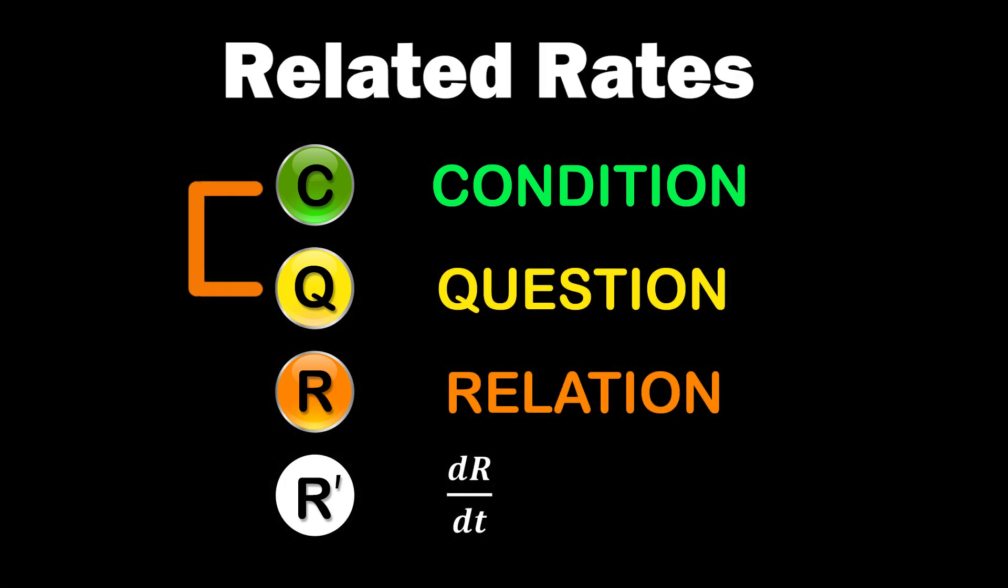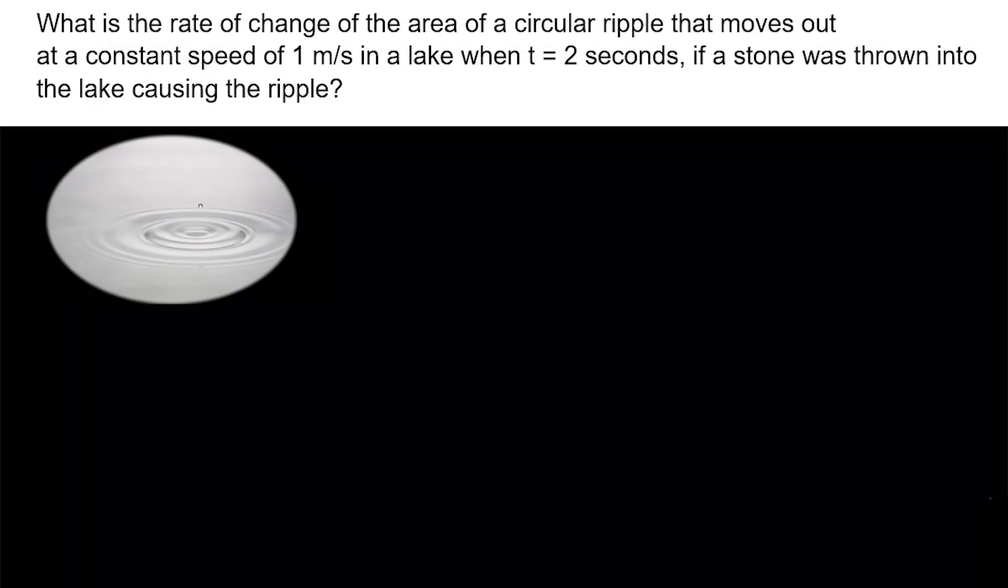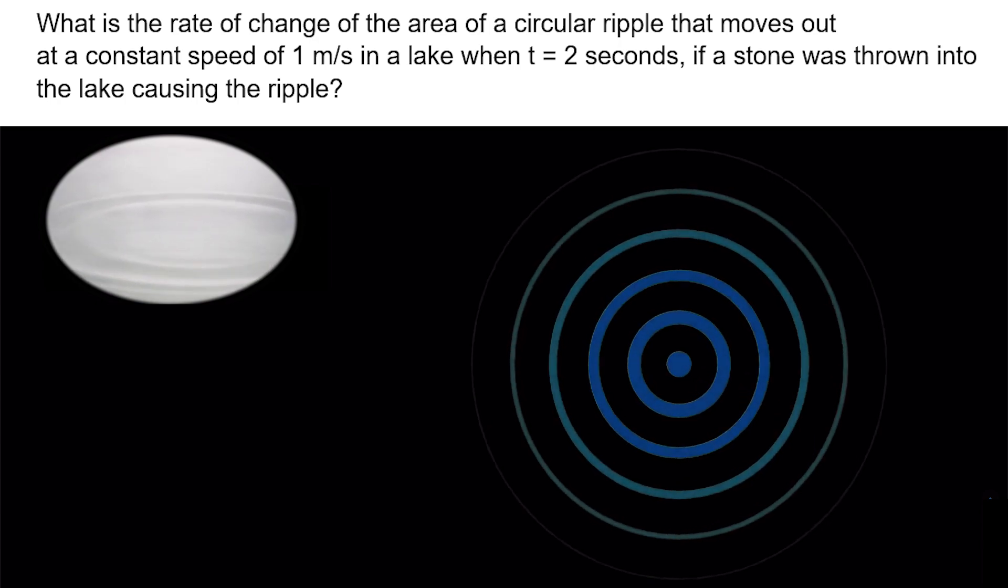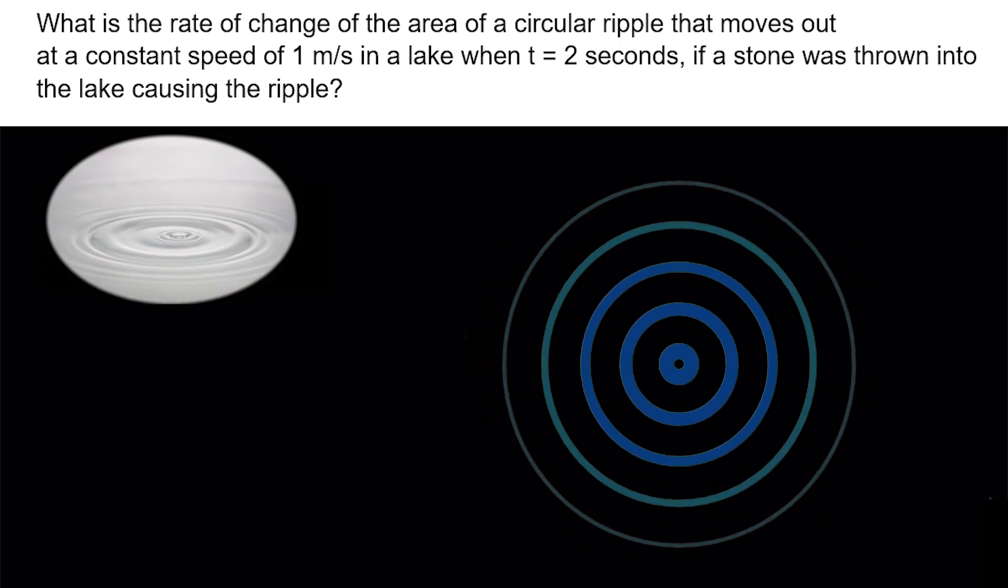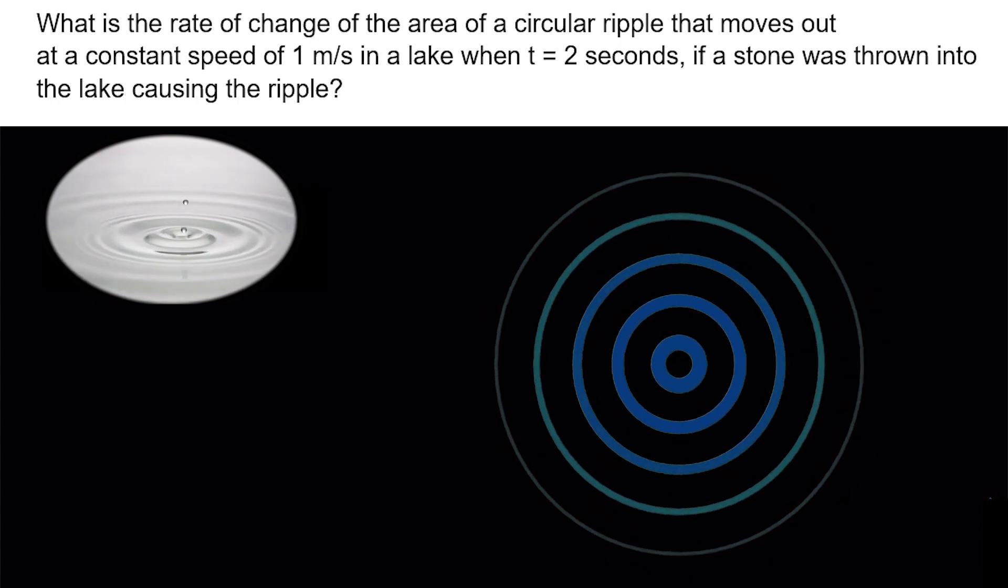Now, let's apply this to solve a common related rates problem, circular ripple problem. When a raindrop falls into calm water, it creates a ripple in the shape of a concentric circle, and the ripple moves away from the center as shown in the video.